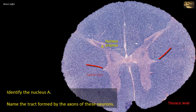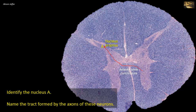Note the intermediolateral cell column and the narrow anterior horn, which are features consistent with a thoracic level section. Neurons comprising this nucleus give rise to axons that cross to the other side through the anterior white commissure and ascend in the spinal cord as the spinothalamic tracts — both the lateral and anterior spinothalamic tracts.